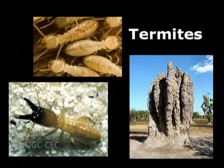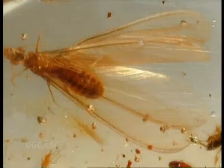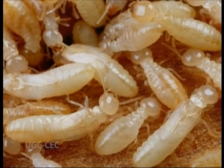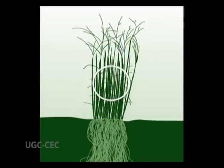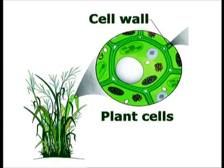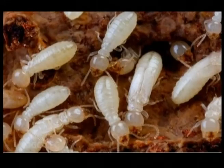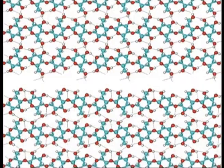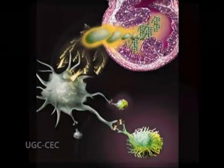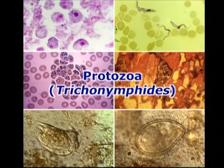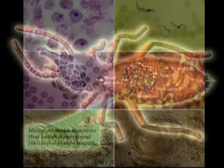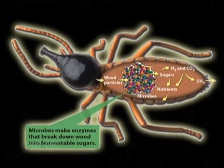Termites. All members of the order Isoptera are eusocial insects. Termites feed primarily on the cellulose and lignin found in plant cell walls. Termites cannot digest the cellulose directly, so they rely upon symbiotic bacteria and protozoa — that is, Trichonymphidae — which live in their gut to supply most of the enzymes needed for cellulose digestion.